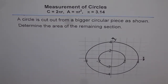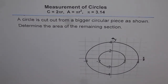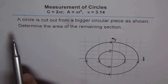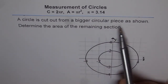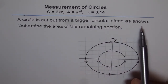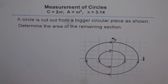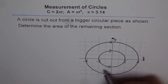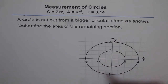Measurement of circles. Here we have a couple of questions where we will try to take out a piece from another given piece and find the area of the remaining piece. In this particular example we have two circles, and the problem before us is: a circle is cut out from a bigger circular piece as shown. Determine the area of the remaining section. This is a big circle and from the big circle we take away the smaller circle — what is the area of the remaining section?